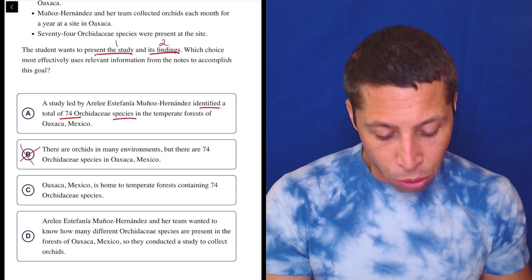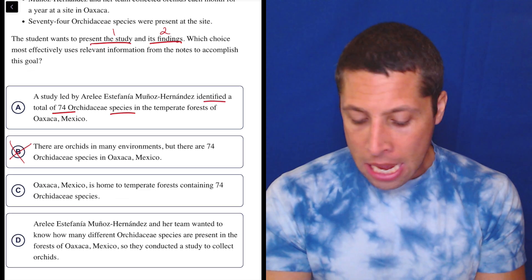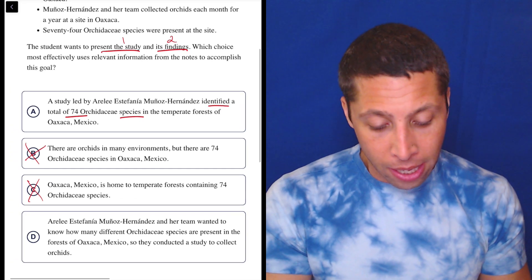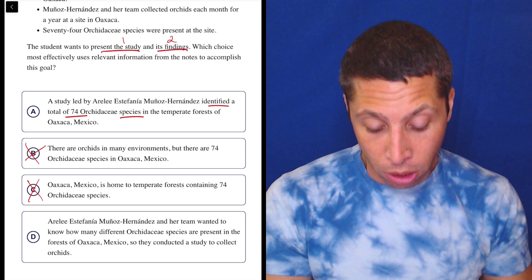Oaxaca, Mexico is home to temperate forests containing 74 Orchidaceae species. Again, it's not saying anything about the study. It just says it as a fact, as if we already know that it's true.